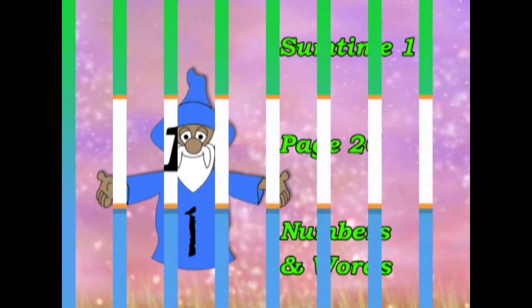You remember you can write one like this with a numeral. Number one. But you can also spell one like this. You can write the word one. O-N-E. One. The word one has three letters. O-N-E.